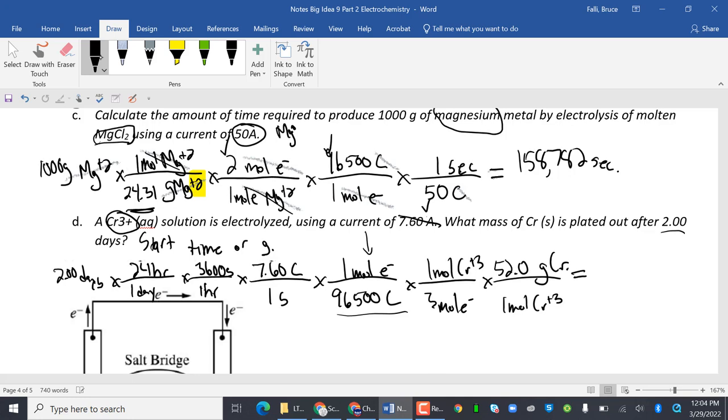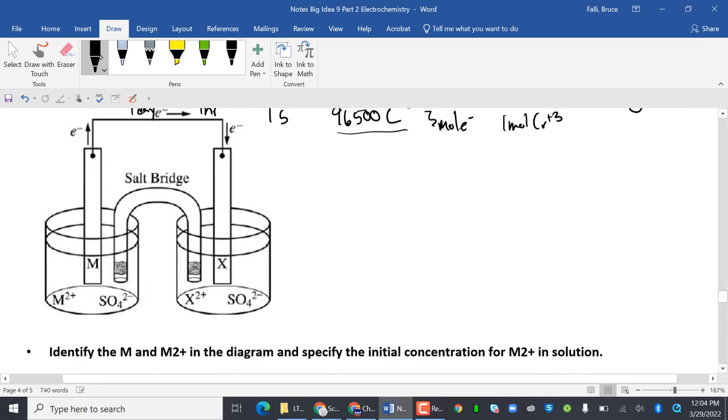Math time. Two times 24 hours in a day, times 3,600 seconds in an hour, times 7.6 coulombs in a second, divided by 96,500 coulombs in one mole of electrons, divided by three moles of electrons in one mole of chromium plus three, times 52.0, equals 236 grams of chromium. Woo doggies. That was good.